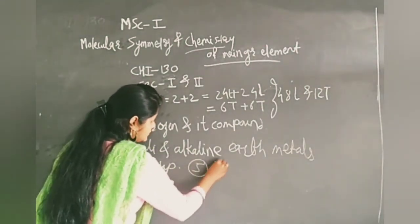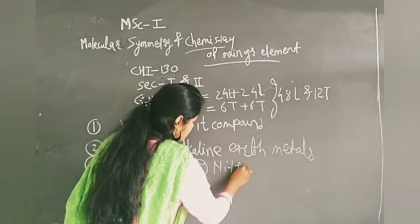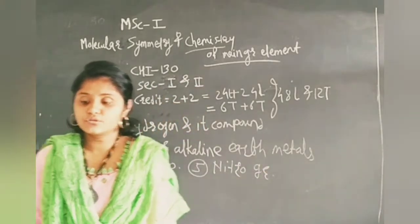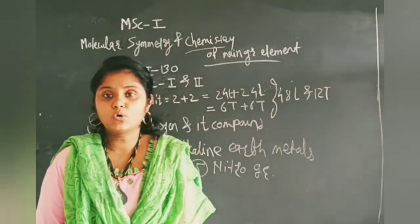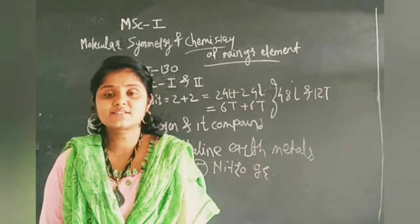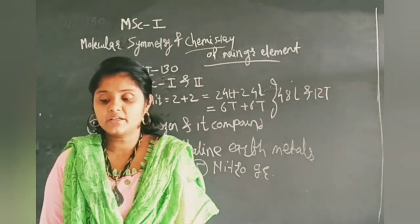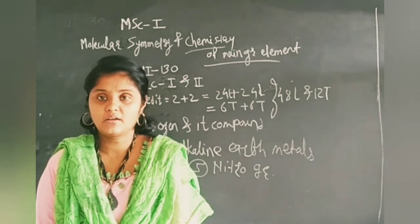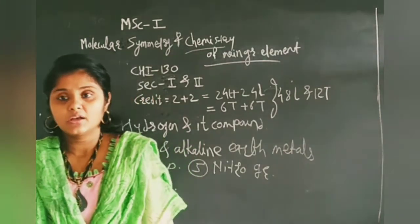Fifth number is nitrogen group. In nitrogen group, we are studying the boron nitrides, oxidation states of nitrogen, and interconversion of PN and SN compounds and their applications.